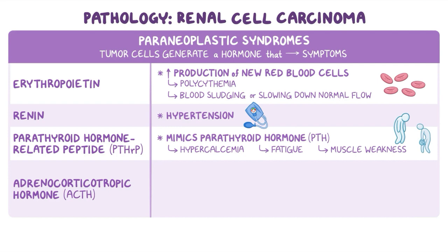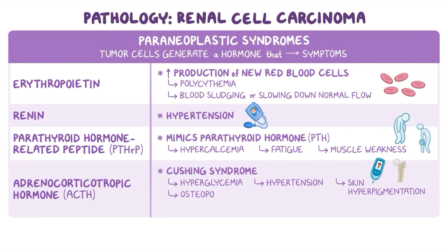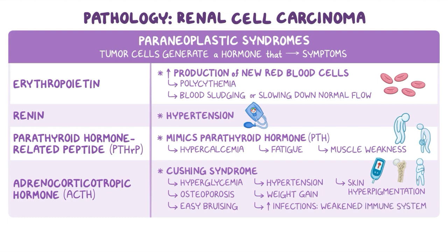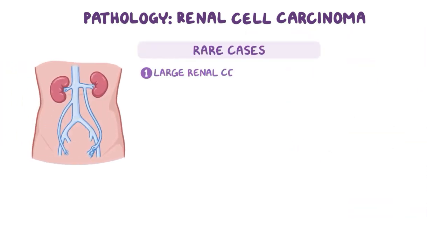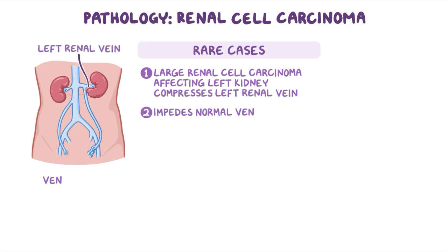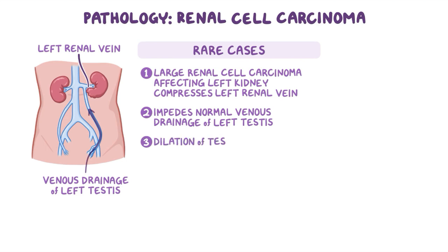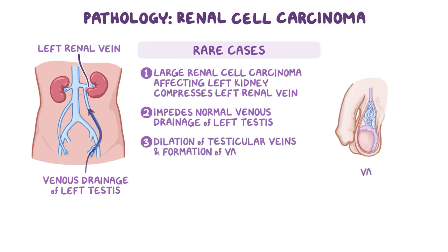ACTH secretion results in Cushing syndrome, which can cause hyperglycemia, hypertension, skin hyperpigmentation, osteoporosis, weight gain, easy bruising, and frequent infections from a weakened immune system. In rare cases, a large renal cell carcinoma affecting the left kidney can compress the left renal vein and impede normal venous drainage of the left testis, leading to dilation of the testicular veins and formation of a varicocele.